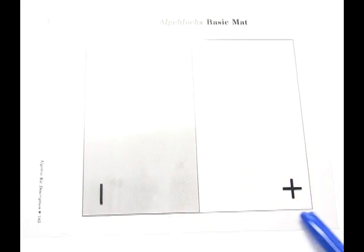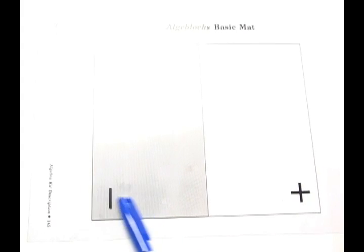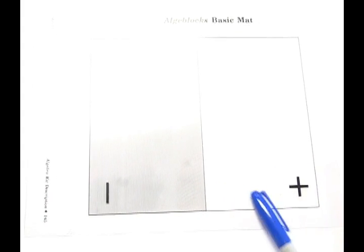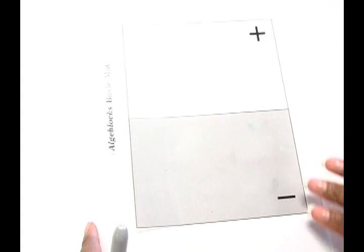So let's take a look at algebrax. Here's our basic mat with our algae blocks. And if you think of the basic mat as a number line and this being zero on your number line, here are all your negative numbers and here are all of your positive numbers. You can also think of the mat as a thermometer with this being zero. Here are your numbers above zero and here are your numbers below.